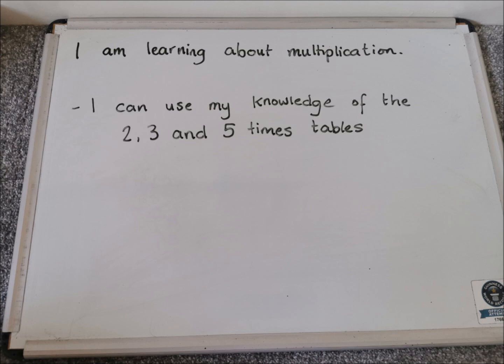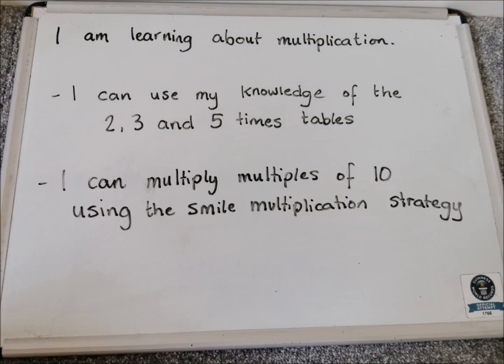We're going to be thinking about using our knowledge of the 2, 3 and 5 times table, maybe a bit of the 4 times table as well. And we're going to be able to multiply multiples of 10 today using this SMILE multiplication strategy. So it's going to be multiples of 10 that we are thinking about.